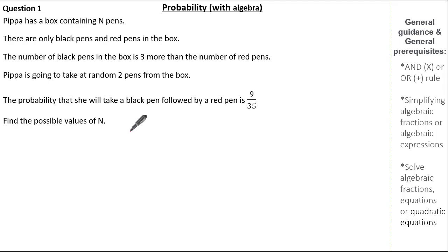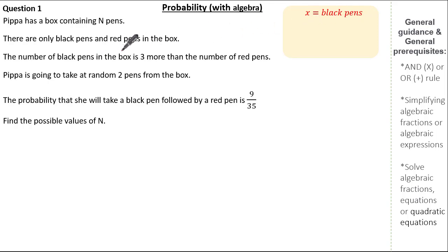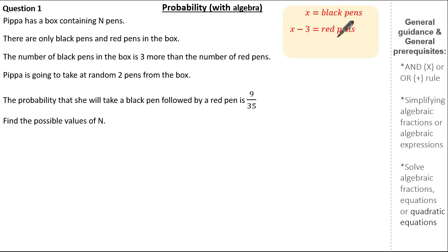Reading the question, it's important to understand what it wants us to find — here it's n, the total number of pens. I'm going to set X to be the number of black pens. Given the number of black pens is 3 more than the number of red pens, the number of red pens is X minus 3. Notice how I'm continuously using X. Now I can work out n: it's the sum of black and red pens, so n equals 2X minus 3.